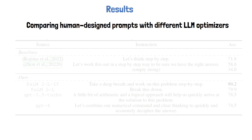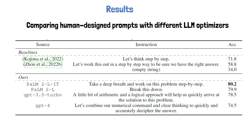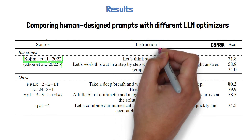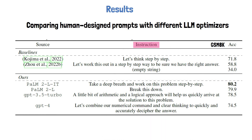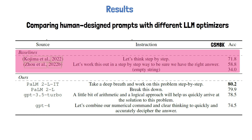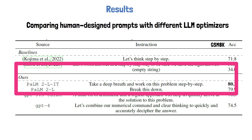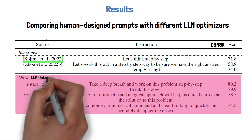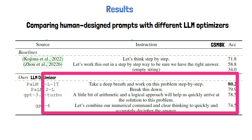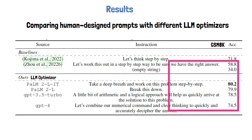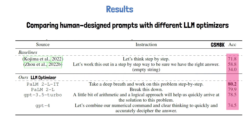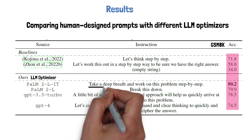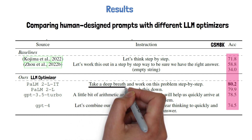In the following table from the paper, each row represents the accuracy of the PaLM-2L model on GSM-8K, each time with a different instruction to empower the prompt. As baselines we see human-designed prompts, and below we see the prompts crafted by OPRO, where each row used a different model as the LLM optimizer. The accuracies for the OPRO-optimized prompts outperform the human-designed prompts with a noticeable margin, where the best one is telling the LLM to 'take a deep breath.'